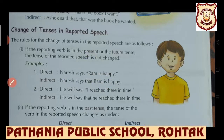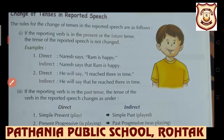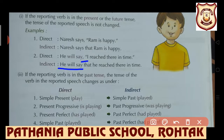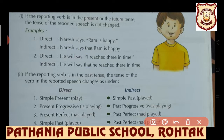Another example showing that if the reporting verb is in the future tense, the tense of the reported clause is also not changed. Direct: He will say, 'I reached there in time.' The reporting verb 'will say' is in future tense, so no change is made. 'I' changes to 'he,' and 'reached' is already in past tense and remains the same. Indirect form: He will say that he reached there in time.